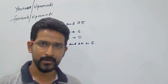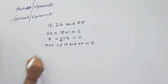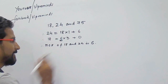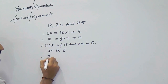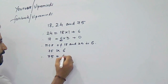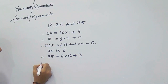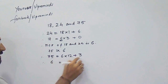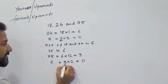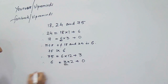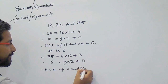Now, take this HCF value of 6 and the remaining number 75, and calculate the HCF of 75 and 6. The greater number is 75. So, 75 = 6 × 12 + 3, giving remainder 3. In the next step, 6 is the dividend and 3 is the divisor. 3 × 2 = 6, so remainder is 0. The divisor here is 3, therefore HCF of 6 and 75 is 3.